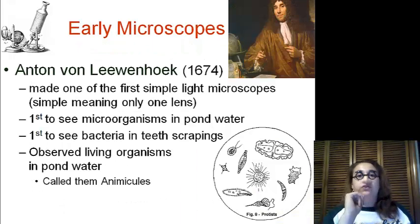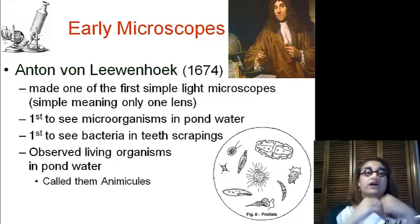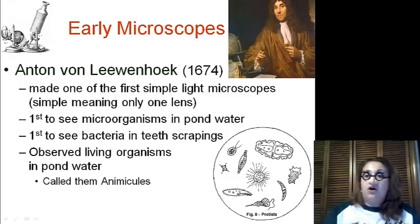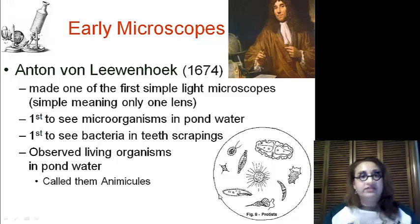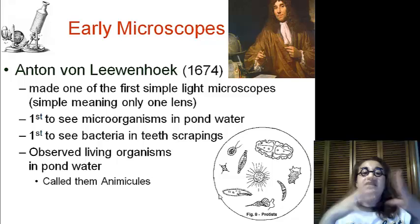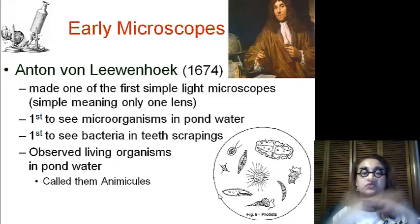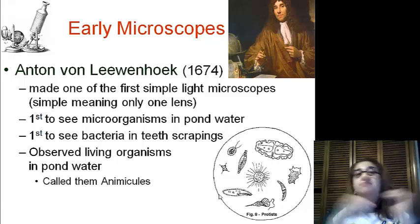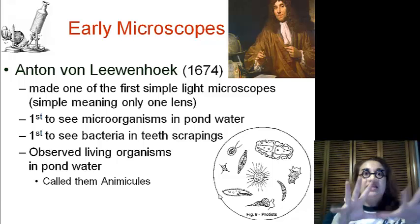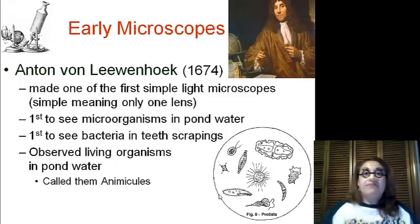Next we have Anton von Leeuwenhoek. In 1674, he made the first simple light microscope with one lens, and he used it to look at pond water, and he saw little moving things. He also saw bacteria with teeth scraping, and he named these things animalcules. He was ridiculed by all of the public, but then he got Robert Hooke on his side, and people were like, these things exist? Really? Cool.